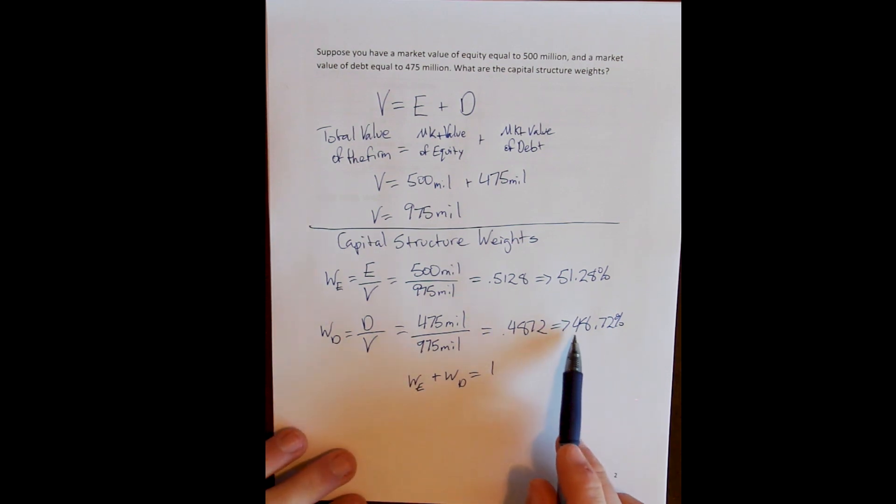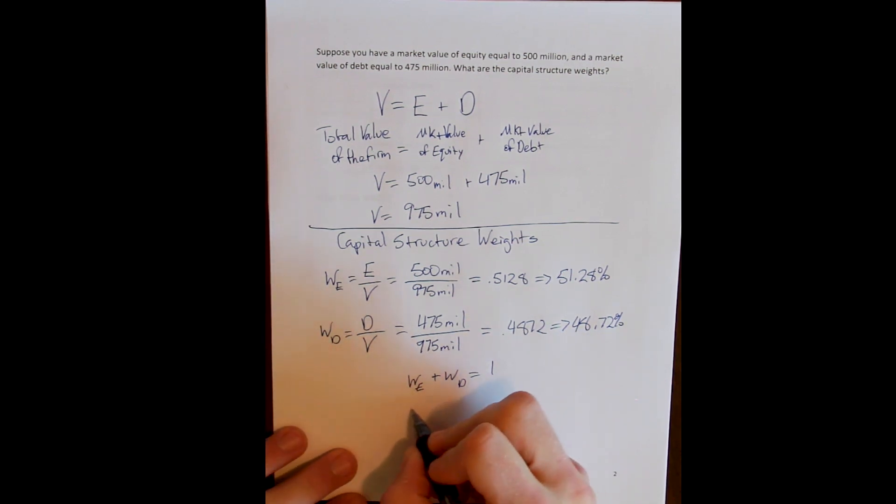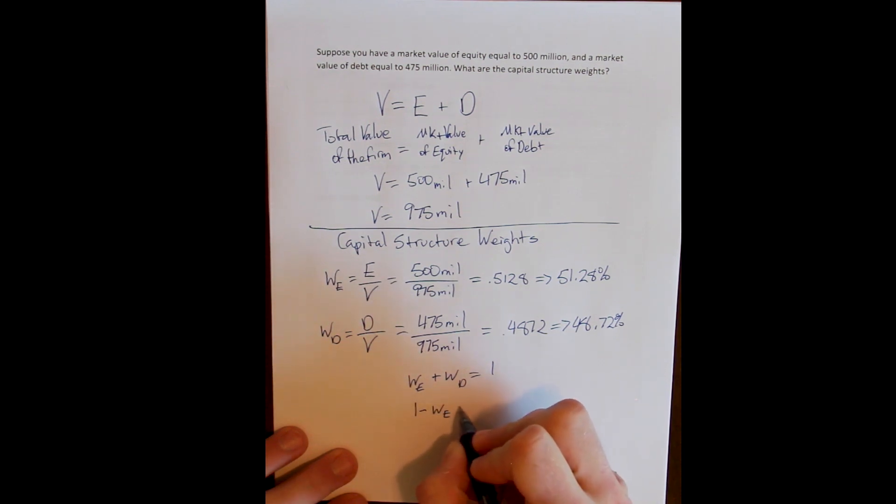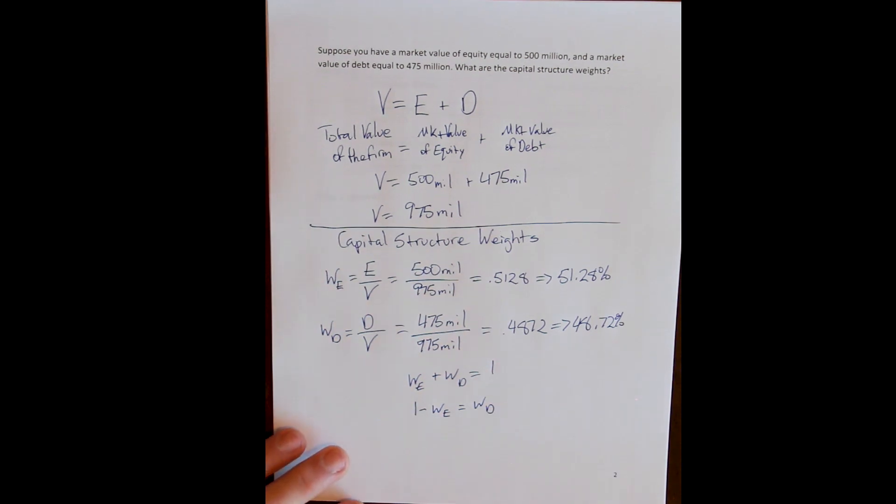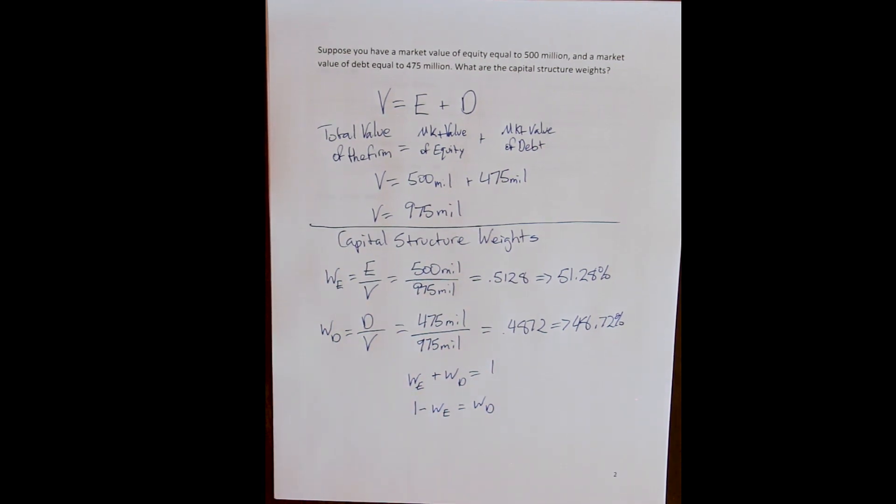So that means that we could have calculated the weight of debt by subtracting one minus the weight of equity, which we calculated first. That would give us the weight of debt because they together have to be one.